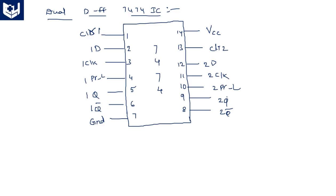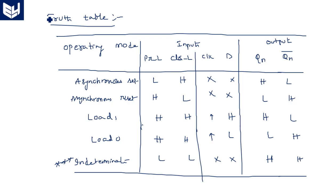The 7474 IC is a dual D flip-flop where two D flip-flops are available. On one side we have one D flip-flop operation and on the other side another D flip-flop, so you can use two D flip-flops from this 7474 IC in parallel. This is the truth table for the D flip-flop.